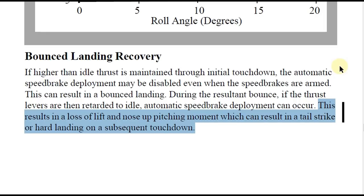From the flight crew training manual: if higher-than-idle thrust is maintained through initial touchdown, automatic speed brake deployment may be disabled. During the resulting bounce, if thrust levers are then retarded to idle, automatic speed brake deployment can occur. This results in loss of lift and a nose-up pitching moment, which can result in a tail strike or hard landing on the subsequent touchdown.